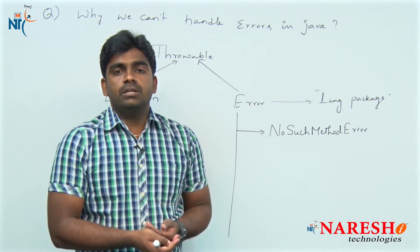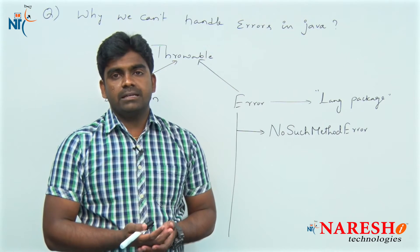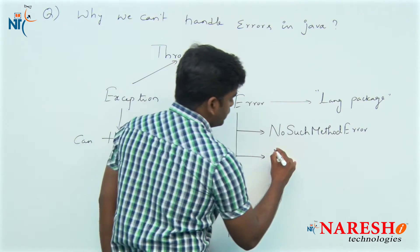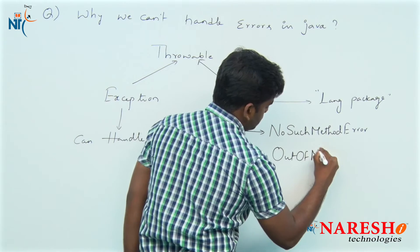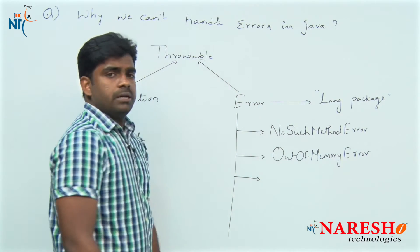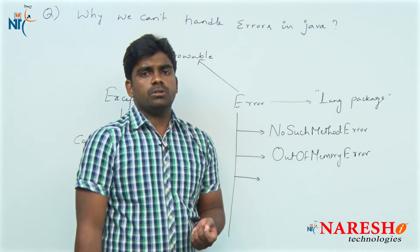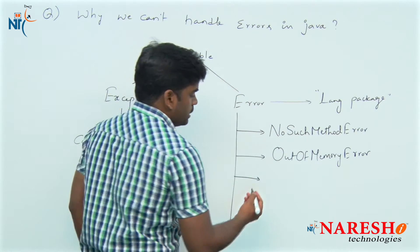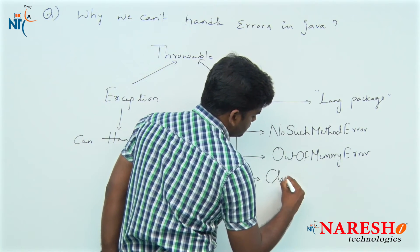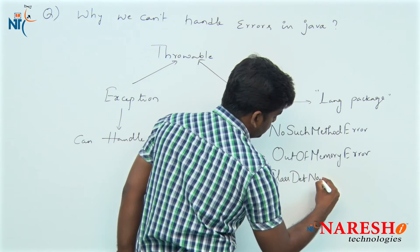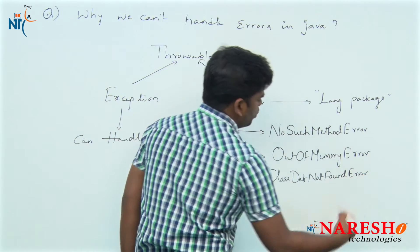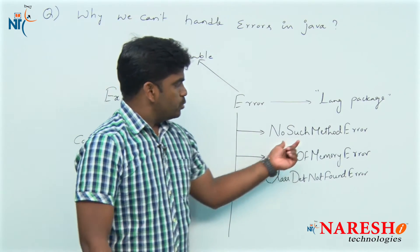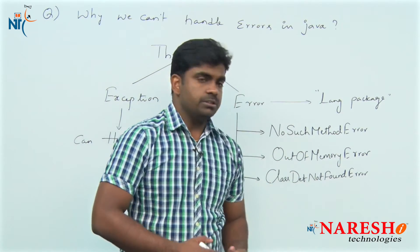When we are running the application, if there is insufficient memory to run it, it will give one more error called OutOfMemoryError. Next, whenever we are trying to execute the program, the JVM first looks for the class file. Suppose the class is not found to start — it will give ClassDefinitionNotFoundError, or simply NoClassDefFoundError. So the errors are: NoSuchMethodError, OutOfMemoryError, and ClassDefinitionNotFoundError.